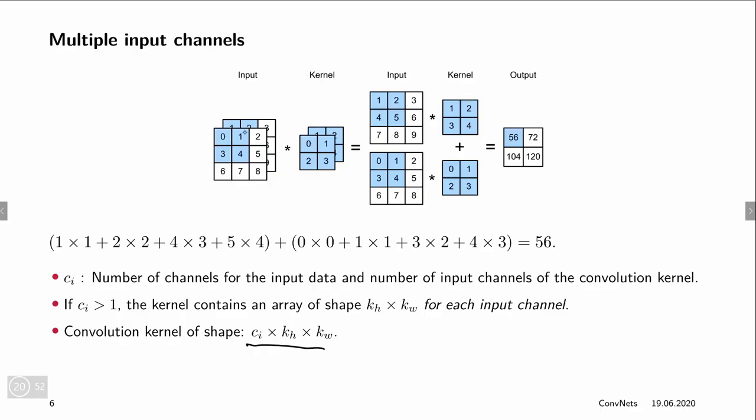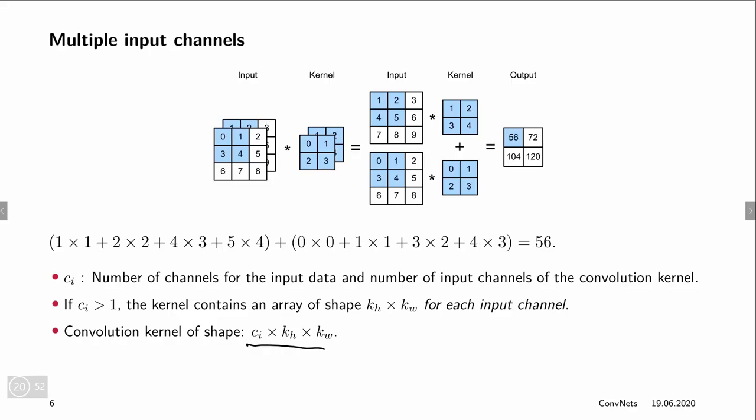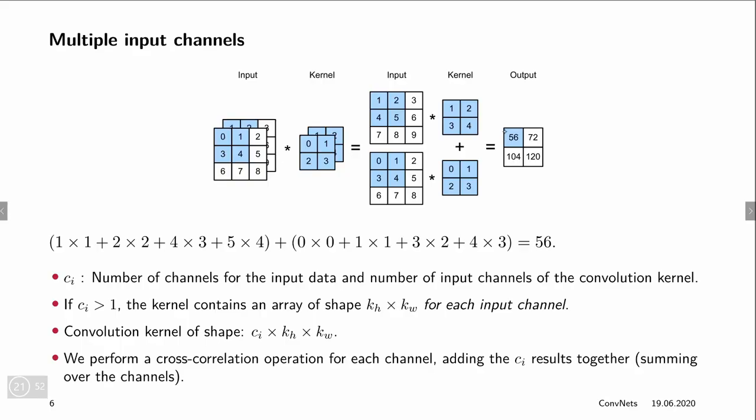The computation with this kernel is performed by applying each of these input channels of the kernels to each channel of the input array. Thus, we first compute a cross-correlation function among each input channel. And then, in the last step, we take the resulting cross-correlations on the individual channels and sum all of these channel-wise operations up to compute a single output channel.